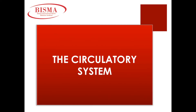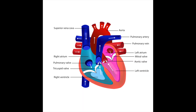The circulatory system: the heart is located in the chest, slightly to the left. It is a muscle that pumps blood. The heart is split into two halves — on the right side deoxygenated blood flows in and out, and on the left side oxygenated blood flows in and out. The heart has four chambers: two upper collecting chambers called the atria, and two lower pumping chambers called the ventricles. Valves within the heart ensure blood flow is one way.